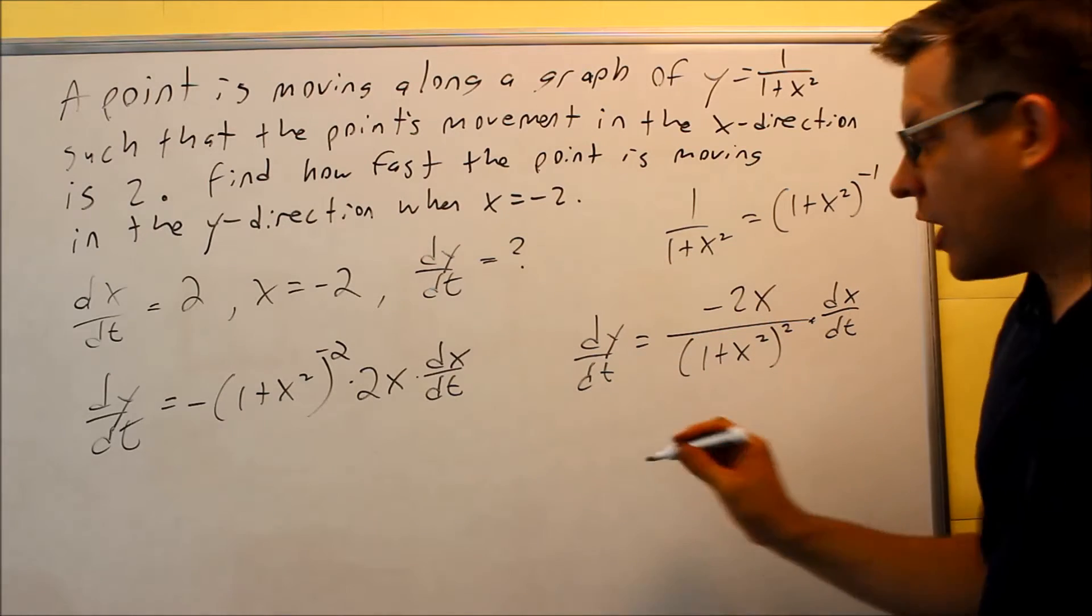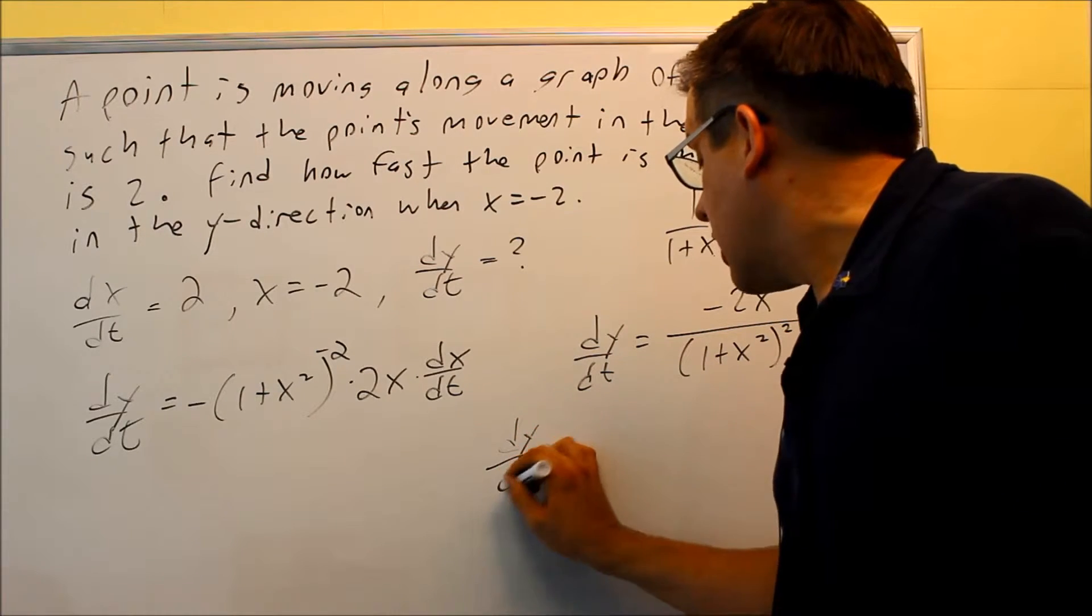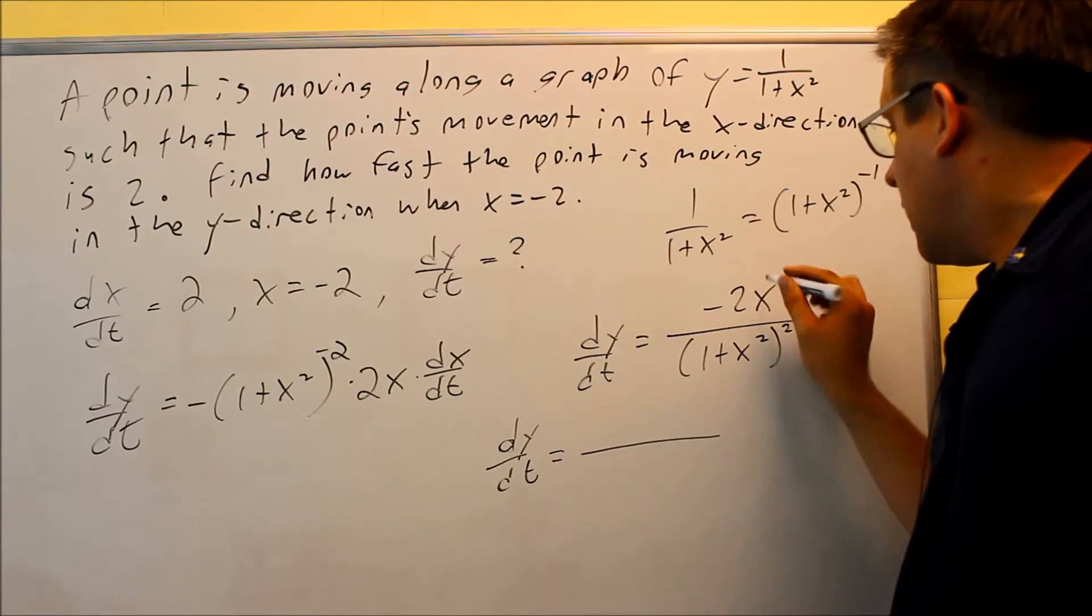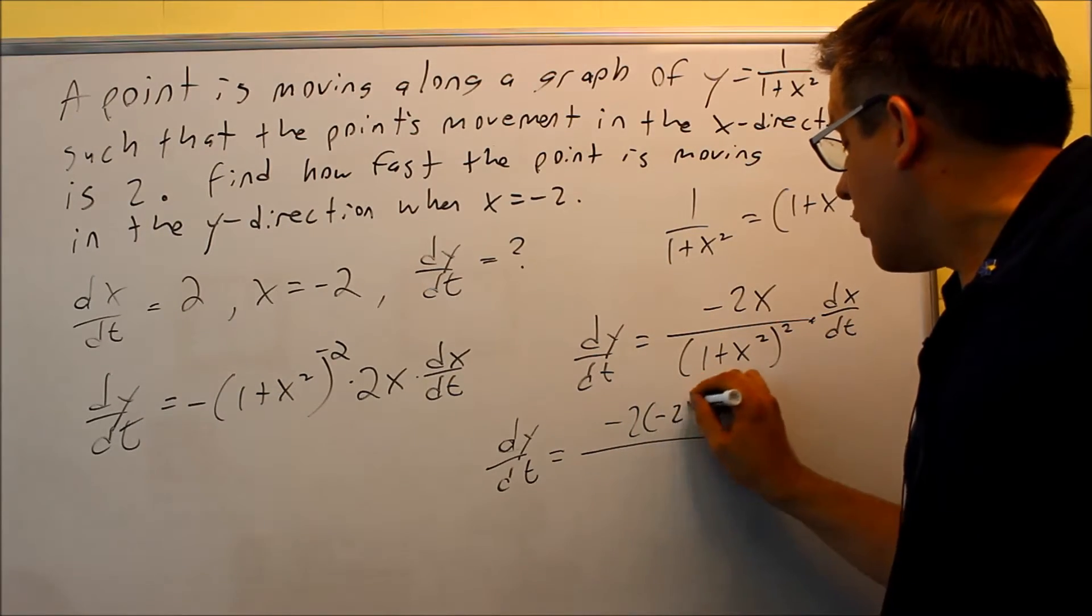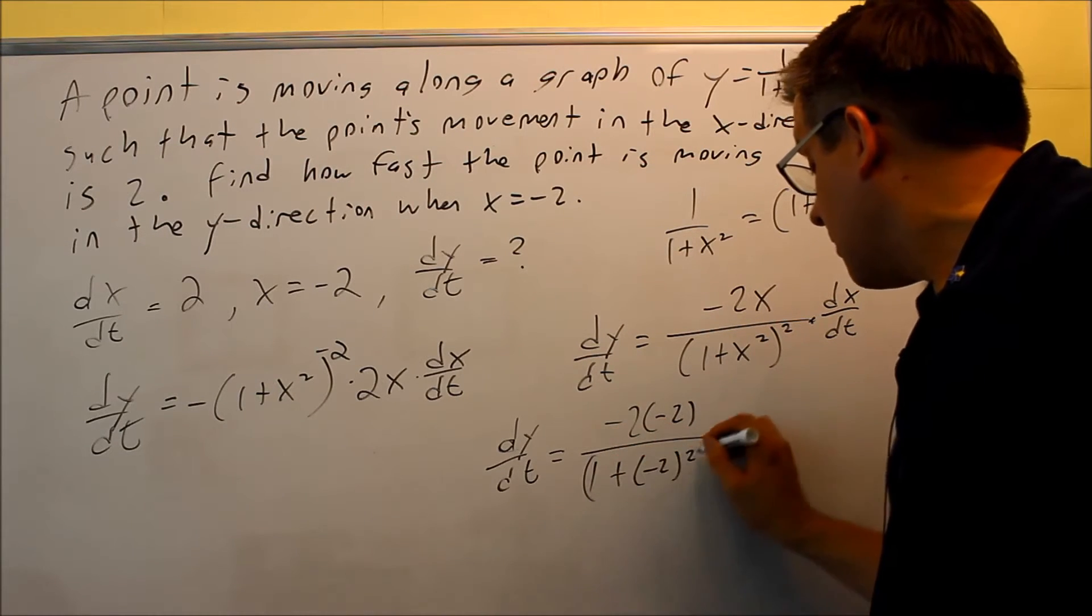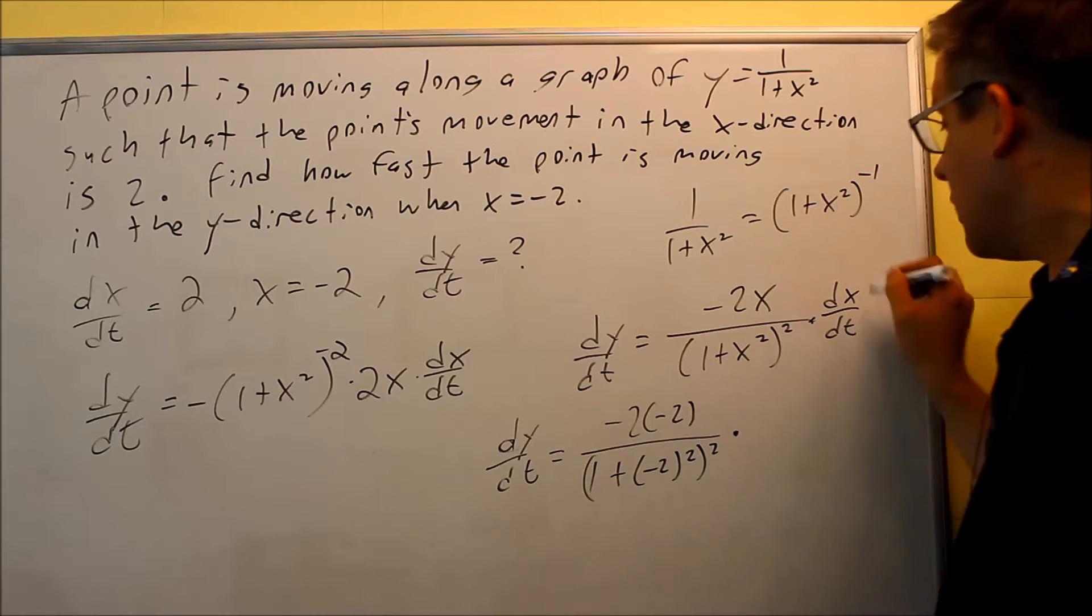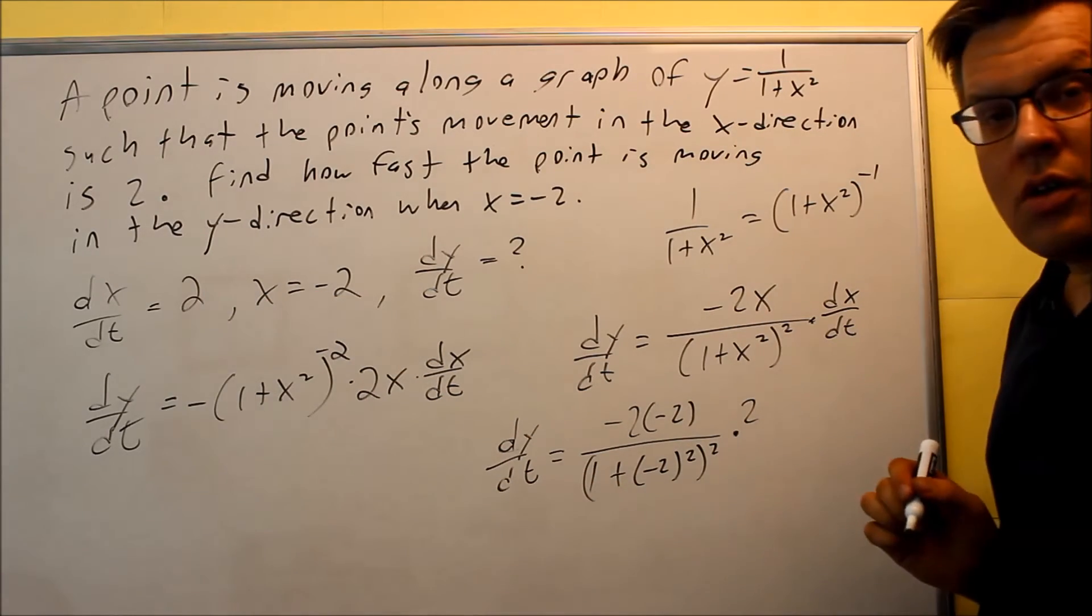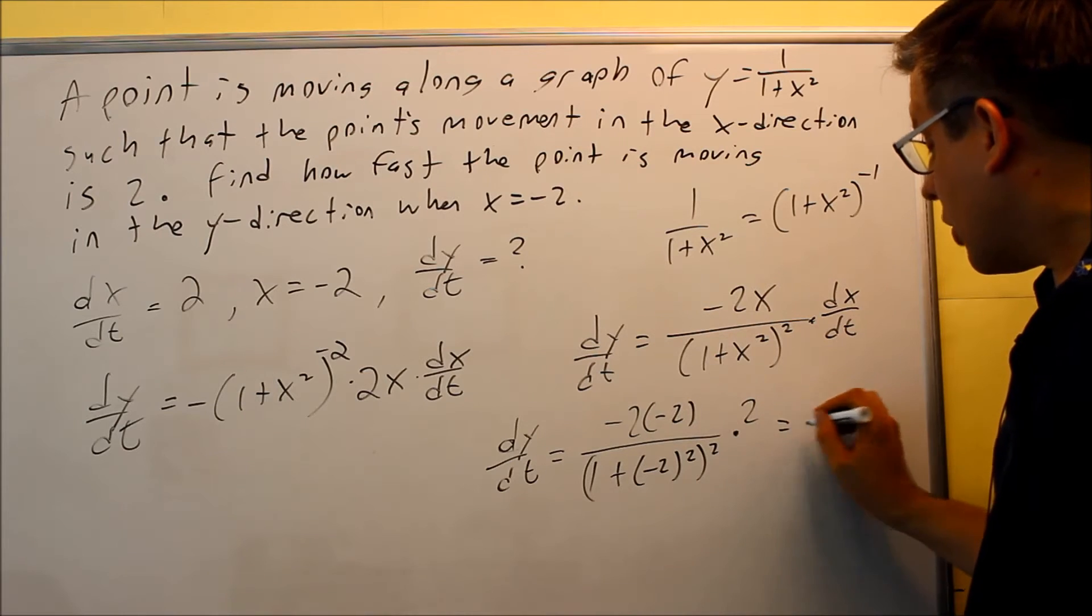We're solving for dy/dt. So that's what we're going to ultimately get a numerical answer for. And you have negative 2 times x—x is -2—I have -2, I'll put it in down here, and then at the end dx/dt—that's given as 2. So now I just need to work this problem out.